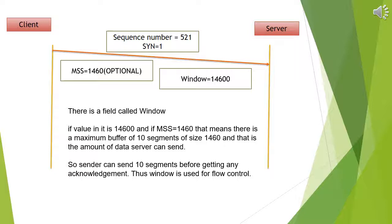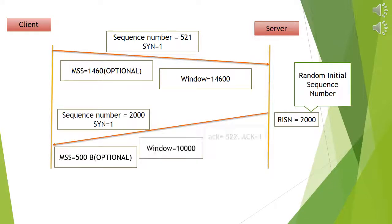The server will send its sequence number, MSS field, and window field to the client so that both can know how much data one can receive and send. The server's sequence number is 2000, SYN flag is also set, MSS is 500, and window is 10000. One more field is added: acknowledgement equals 522, which is the last sequence number received from the client (521 + 1). ACK equals 1 represents a flag that tells whether the given acknowledgement is valid or not.